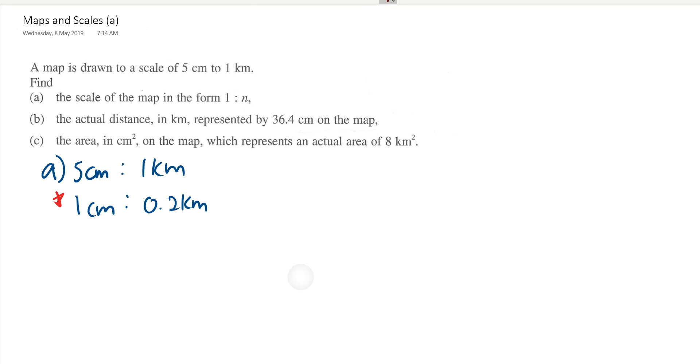Next, 0.2 km equals how many? You can use your calculator. 0.2 km equals 200 meters, and then 200 meters equals 200 plus another two zeros cm.